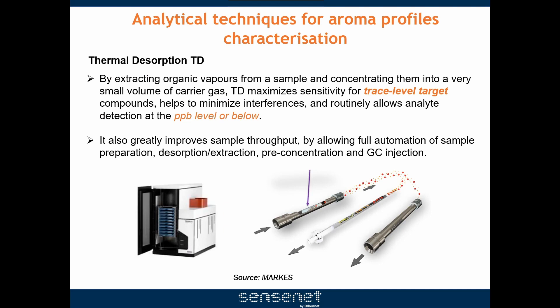We use thermal desorption for odor characterization. By extracting organic vapors from a sample and concentrating them into a very small volume of carrier gas, thermal desorption maximizes sensitivity for trace level target compounds, helps to minimize interferences, and routinely allows analyte detection at the parts-per-billion level or below. It also greatly improves sample throughput by allowing full automation of sample preparation, desorption extraction, pre-concentration and GC injection.